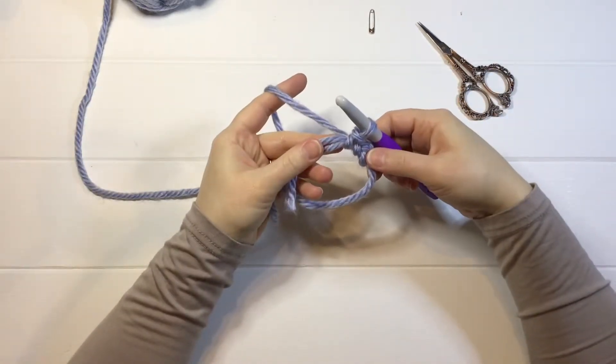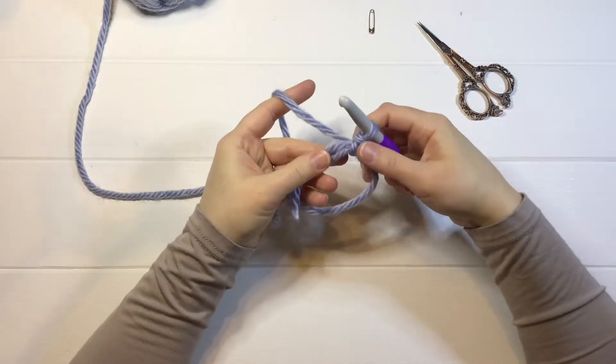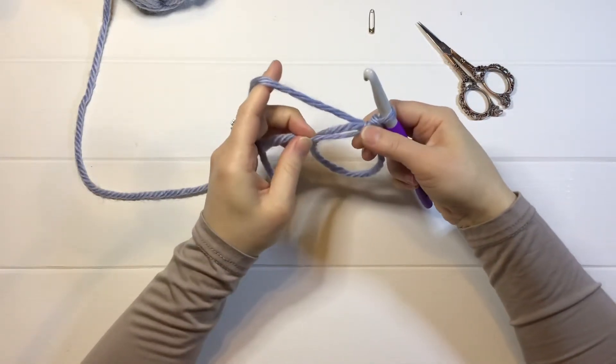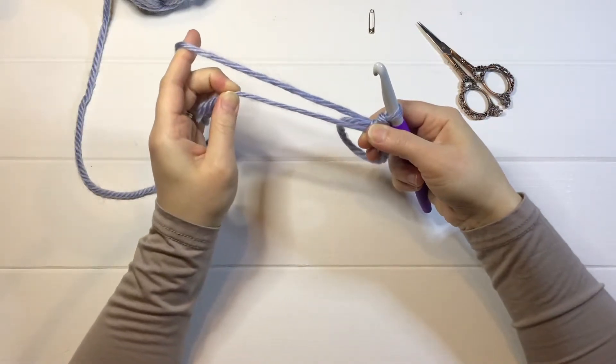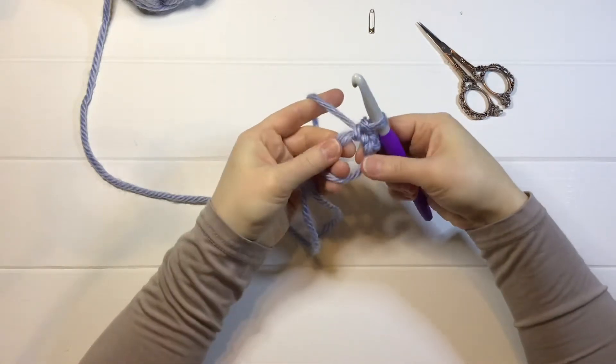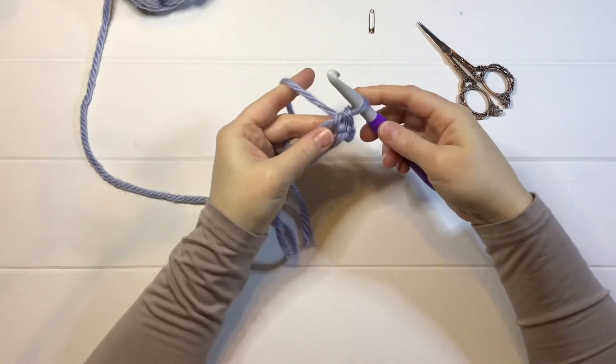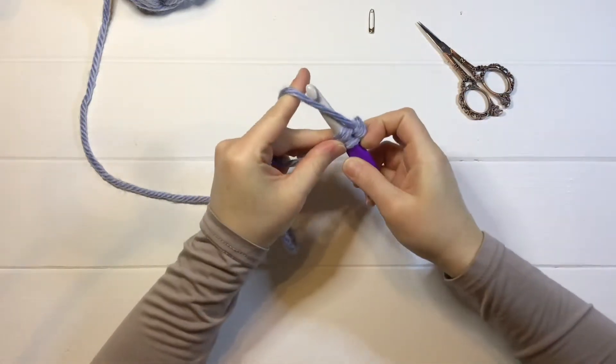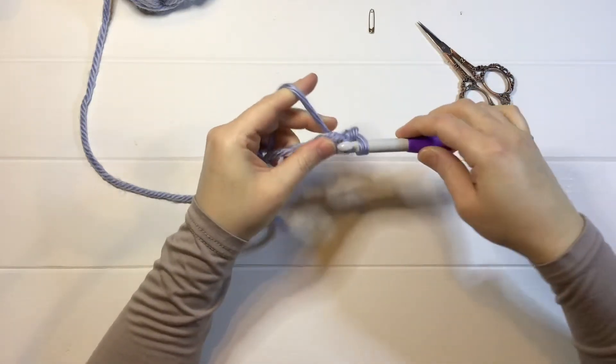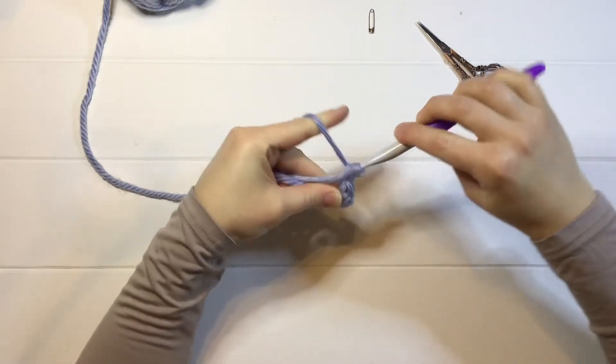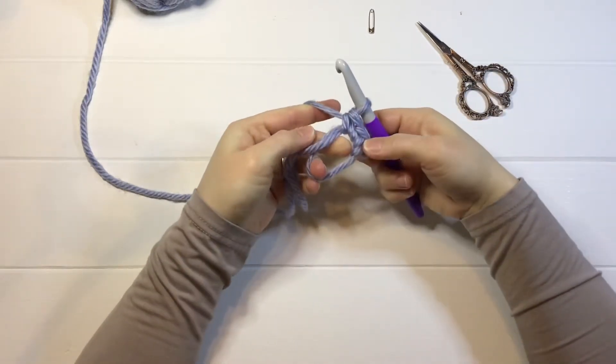And you can tighten this circle up anytime you want by just pulling on this tail of yarn here, so let's single crochet again. Insert into the circle, yarn over, pull back through, yarn over, and pull through both loops. And that's your single crochets.